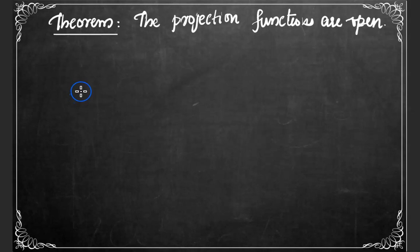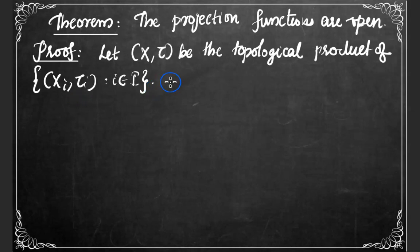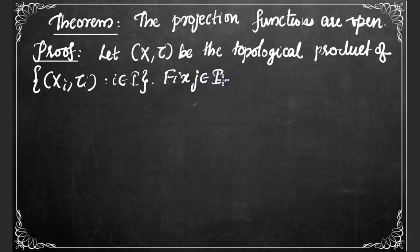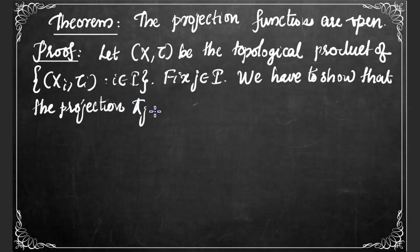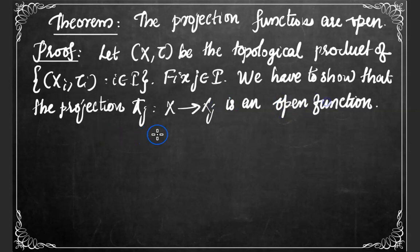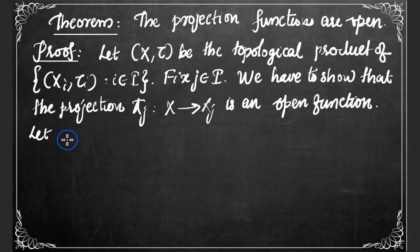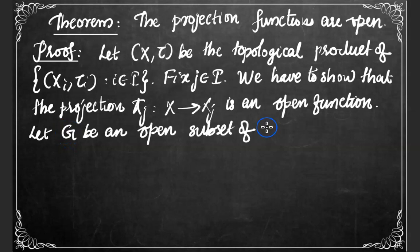The next theorem states that the projection functions are open. For the proof, let X be the topological product of the spaces Xᵢ, for i element of I. Fix an index j element of the index set I. We have to show that the projection πⱼ, defined from X to Xⱼ, is an open function — that is, the image of every open subset of X under πⱼ is open in Xⱼ. Let G be an open subset of X.